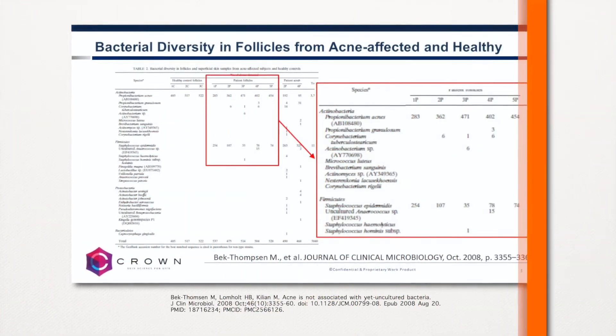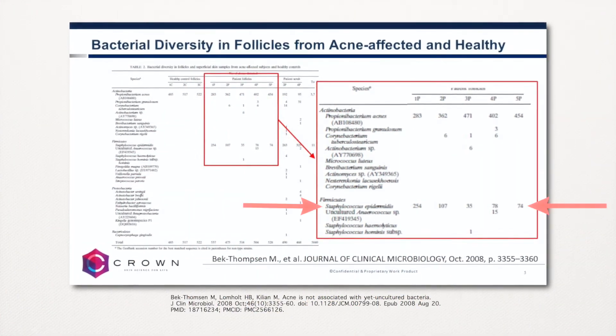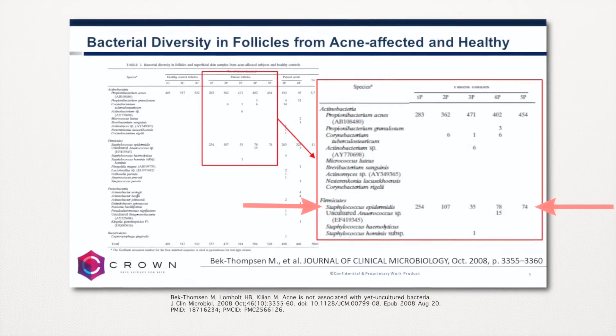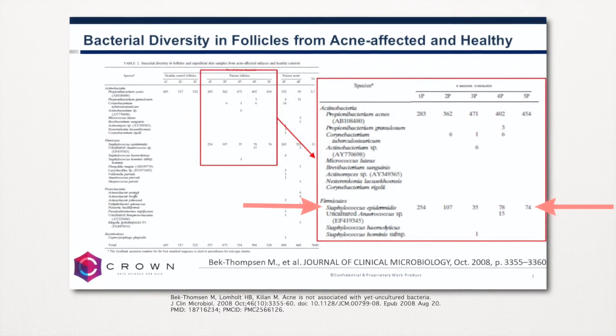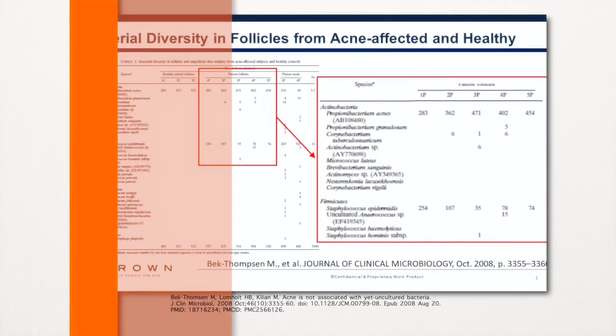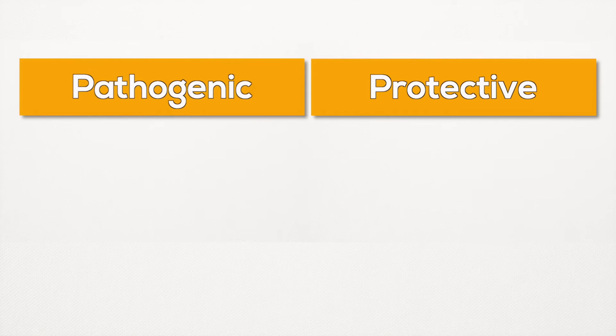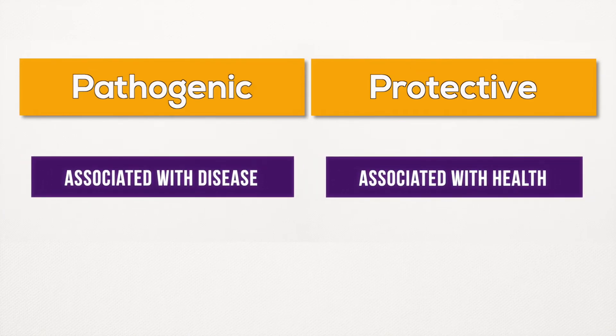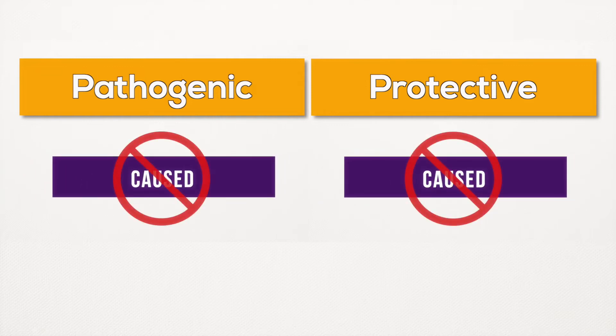For all the talk about C. acnes causing acne, little is said about the fact that multiple studies have shown that acneic skin actually has less C. acnes and more presence of other bacterial species, including the increase in at times commensal Staphylococcus epidermidis, especially in the hair follicle where they can produce biofilms that can contribute to the blockage of the pore. However, we should also note that not all Staphylococcus epidermidis strains are the same either. For simplicity, I'll be referring to bacterial strains as either pathogenic or protective, depending on their associations with either disease or health, not necessarily to imply that they directly cause either disease or health.